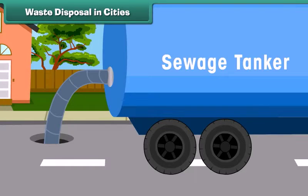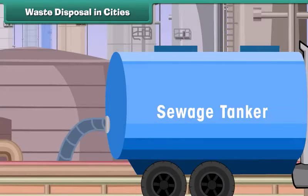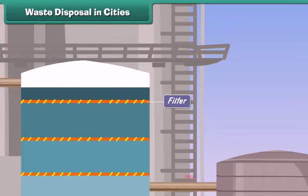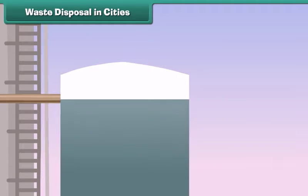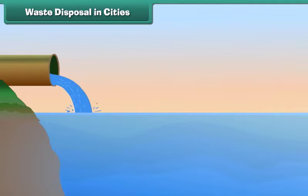The raw sewage collected from all over the city is first passed through a system of filters placed in machines. Filters help separate debris from heavy particles. The debris is then pumped into another tank where the remaining solid material settles down. The settled material is called sludge. The leftover liquid is drawn out, treated with chlorine to make it germ-free, and released into a river.